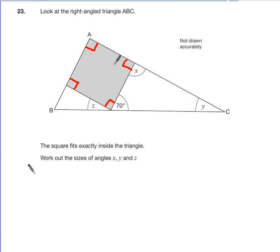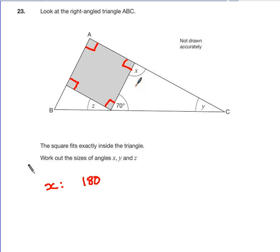Work out the sizes of angles X, Y, and Z. Now, X is probably the easiest one out of all of them to do. Because if we look at it, it's on a straight line. One straight line is 180 degrees. So, we have 180 degrees, and the only other angle on there is this right-angle, which is 90 degrees. So, if we take away that 90 degrees, what we're left with is X. And that must mean that X is also 90 degrees.